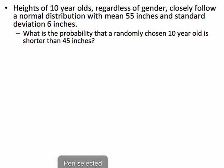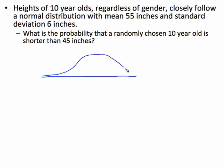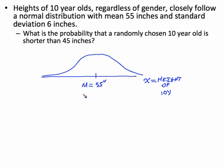As usual when working with these normal problems, we're going to start off with a picture. Let's draw a standard normal bell-shaped curve. The x-axis this time represents heights — specifically the height of our ten-year-olds. We know this distribution has a mean of 55 inches and a standard deviation of 6 inches, so we should put our units on the axis.